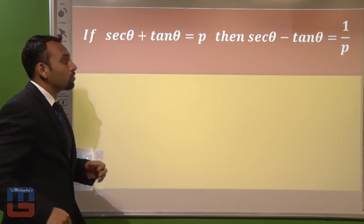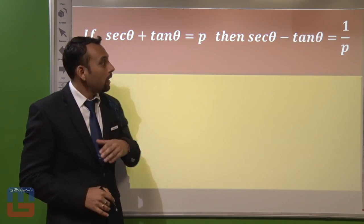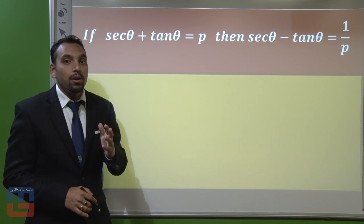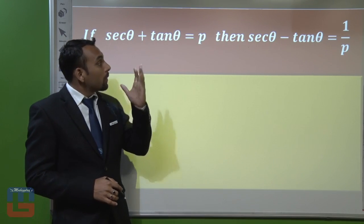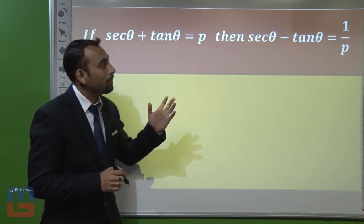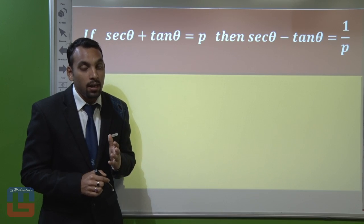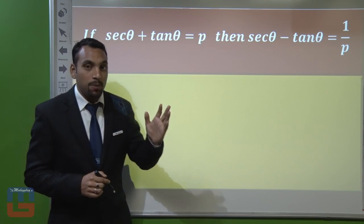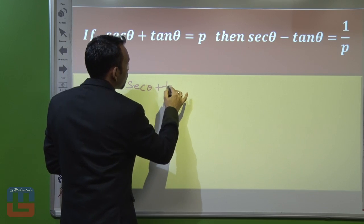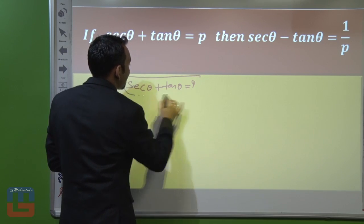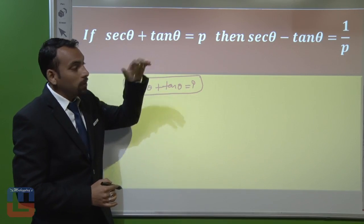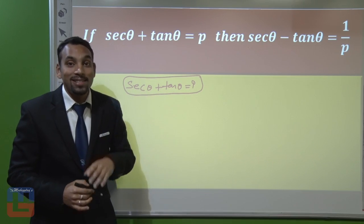Now let us see the approach and the trick. The trick is: if we are given sec θ + tan θ = p, then the relation is sec θ − tan θ = 1/p. Now let us see where this relation comes from. We have given sec θ + tan θ = p, and we have to derive that sec θ − tan θ = 1/p.